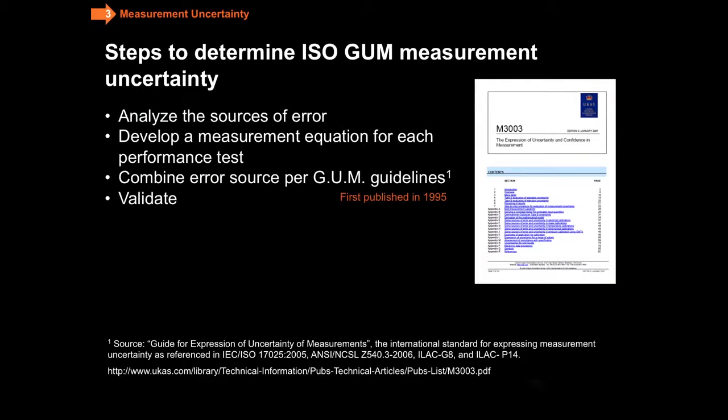How do you accomplish and make an error budget using the guide for expression of uncertainty measurement? So here's the general outline. As you analyze the sources of error, you come up with a measurement equation for each of the performance tests, and then you model the errors and you combine them per the outlines of the GUM, and then finally, as always, you validate.